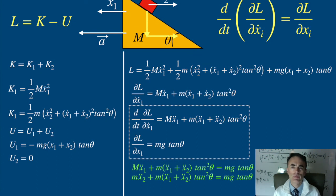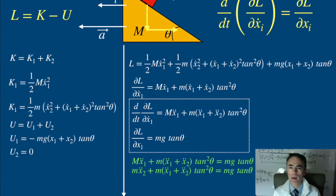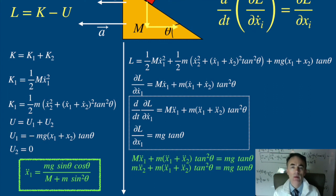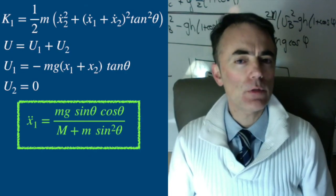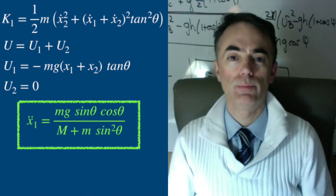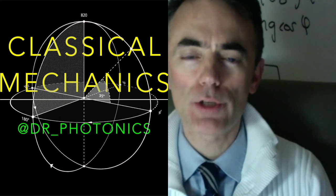These are the differential equations that, after a bit of algebra, we get that x1 double dot is mg sine theta cosine theta over M plus m sine squared theta. Now you can get this same result applying Newton's second law. That's an exercise for you to do. May the Lagrangian equations be with you!